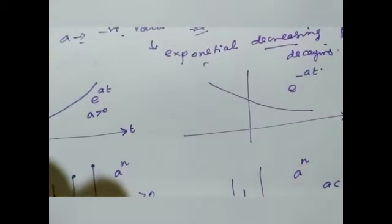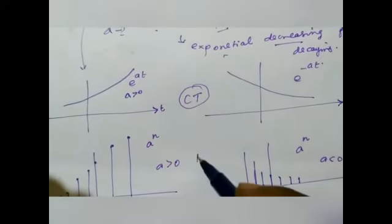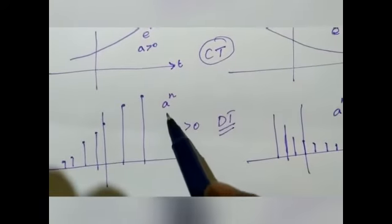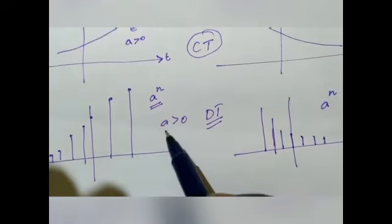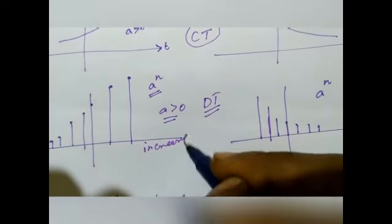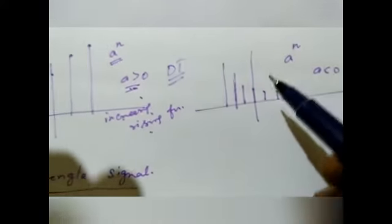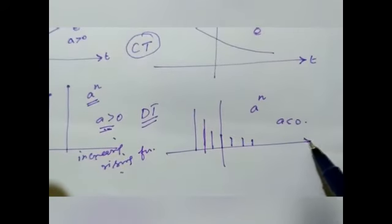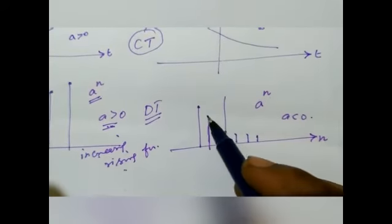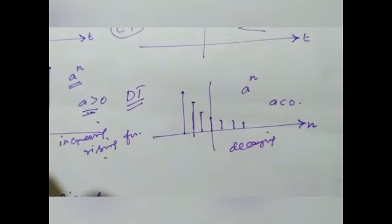For discrete time signal, the same exponential function is denoted as a^n. When a is greater than zero, a^n is called an exponential increasing or exponential rising function. When a is less than zero, a^n is called an exponential decaying function.